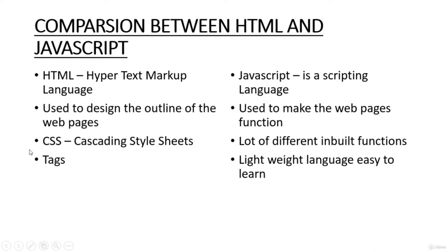JavaScript is a scripting language — understand the difference. HTML designs the outline of web pages, while JavaScript makes web pages function. For example, a button like 'Submit' or 'Login' is designed using HTML, but when you click it, your information gets saved, you get redirected, or you get an alert saying 'submitted successfully' — that is done by JavaScript. JavaScript controls what the pages do.